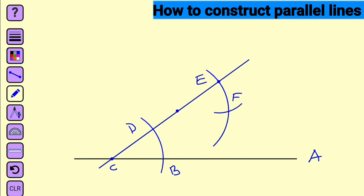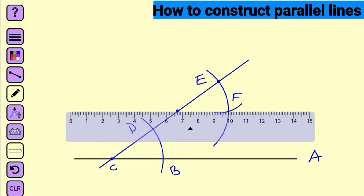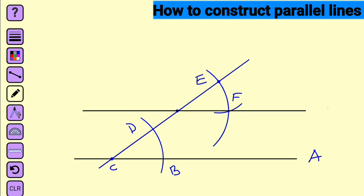Finally, we are going to connect the initial point and F together using our ruler. Hence, these two black lines are said to be parallel to each other. Let me call it G. Therefore, line A and line G are said to be parallel — no matter where they get to, they will never meet.